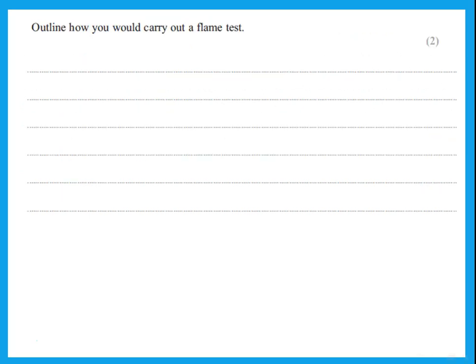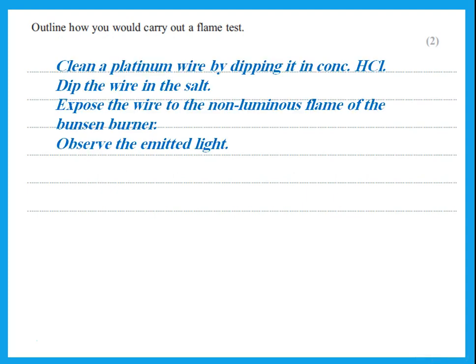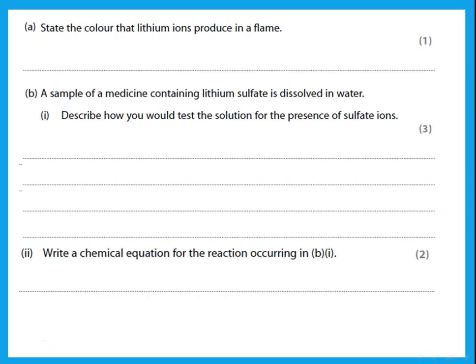Outline how you would carry out a flame test. Clean a platinum wire by dipping it in concentrated HCl, then dip the wire in the salt. Expose the wire to the non-luminous flame of the Bunsen burner and observe the emitted light. This is how you carry out a flame test.